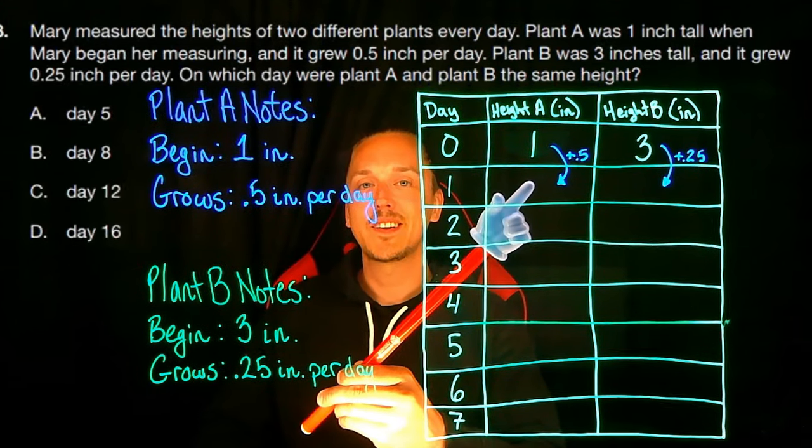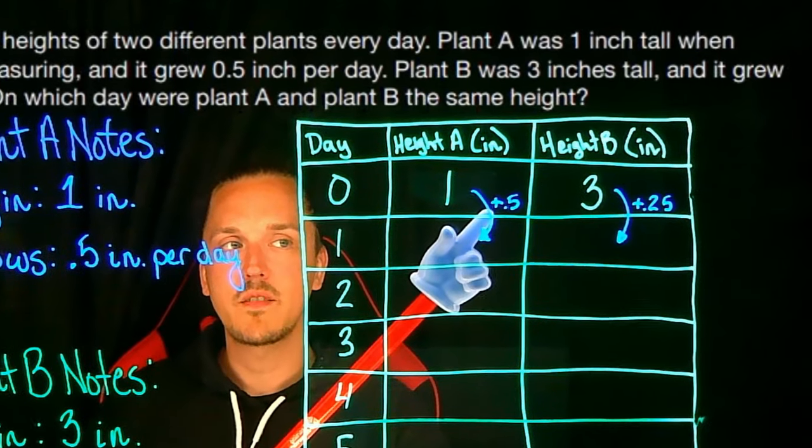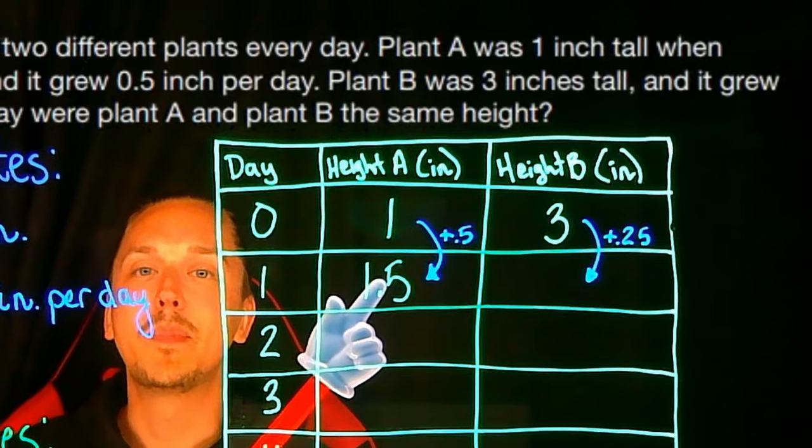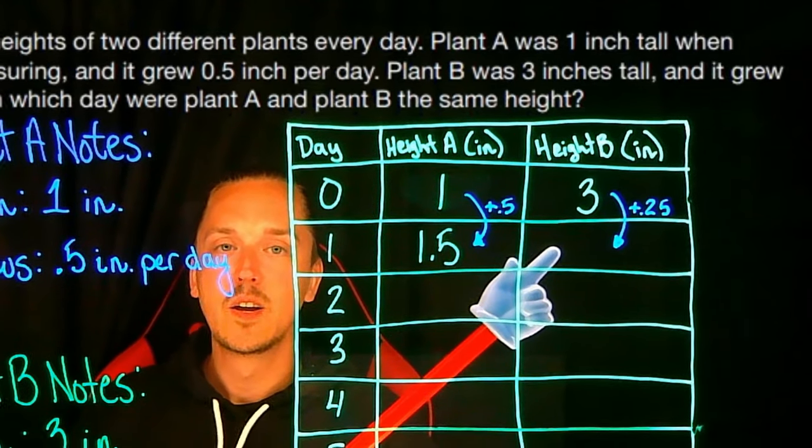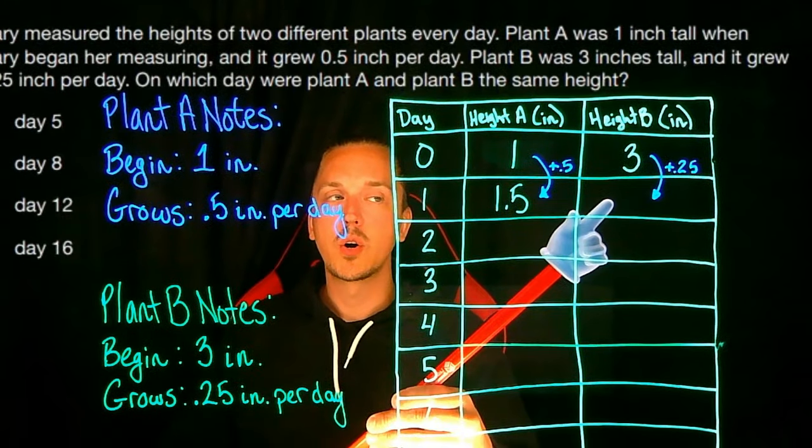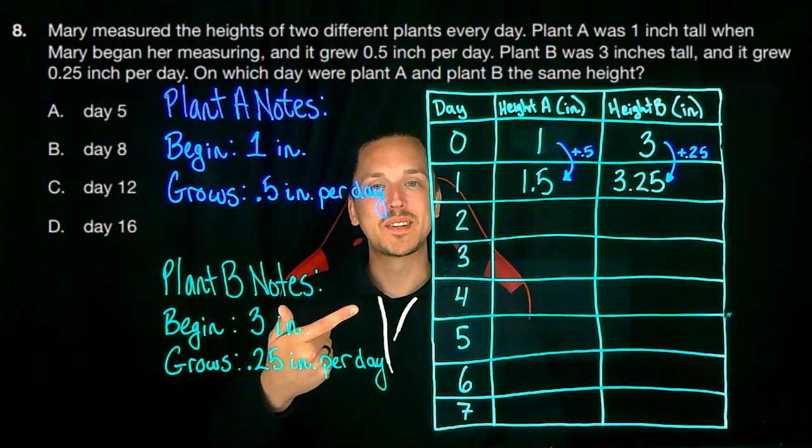And thus, the height of plant A on day one will be one plus 0.5 or 1.5. And the height of plant B on day one will be three plus 0.25 or 3.25. Alright, now that we know the game plan, let's complete this table together.